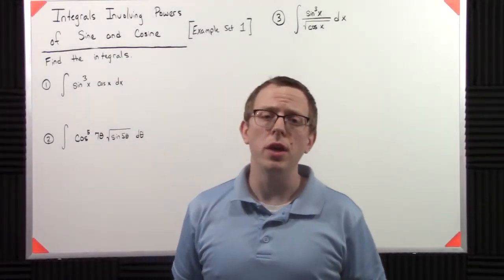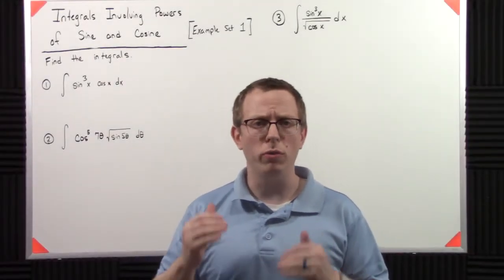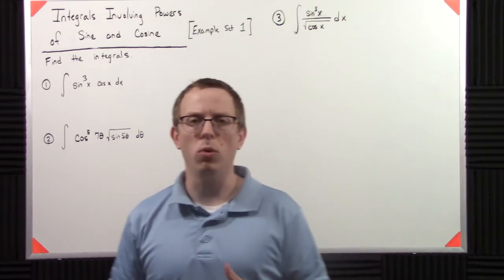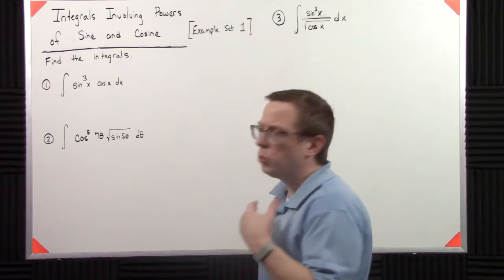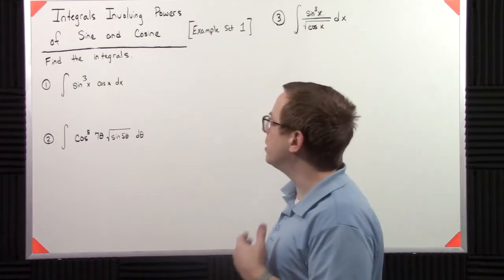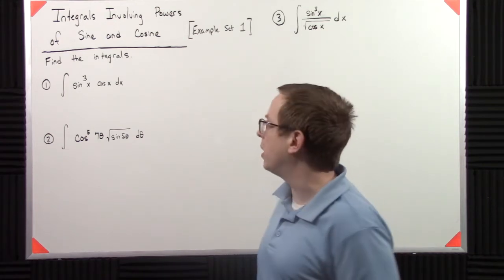Let's apply the techniques that we learned in solving trigonometric integrals with arbitrary powers to some explicit integrands here. So we want to find the integrals. The first one is sine cubed of x cosine of x dx.